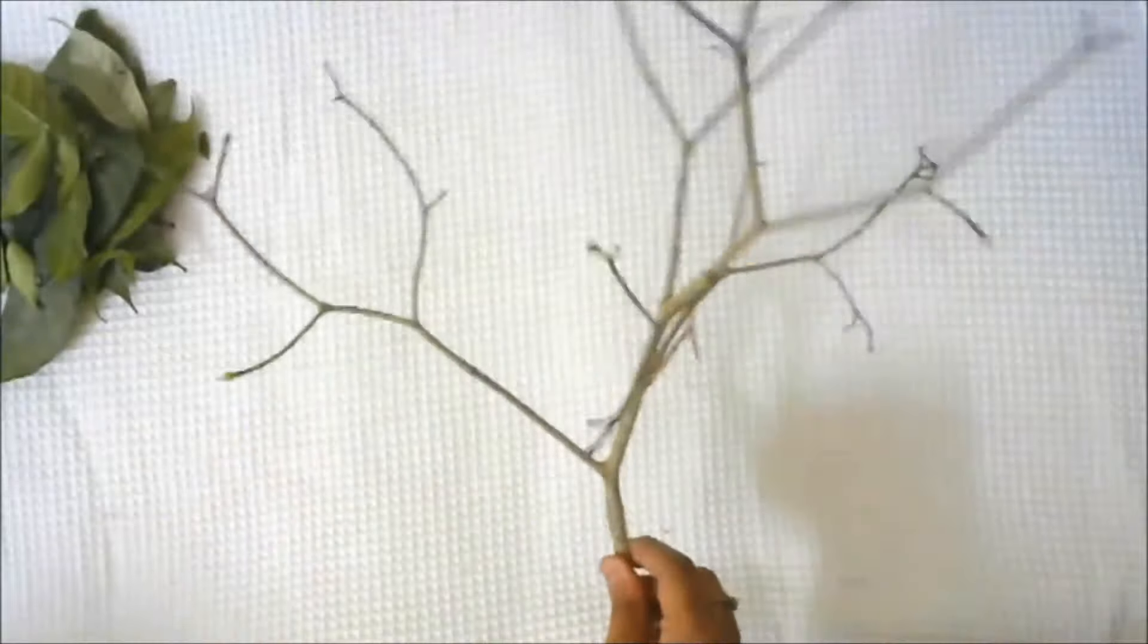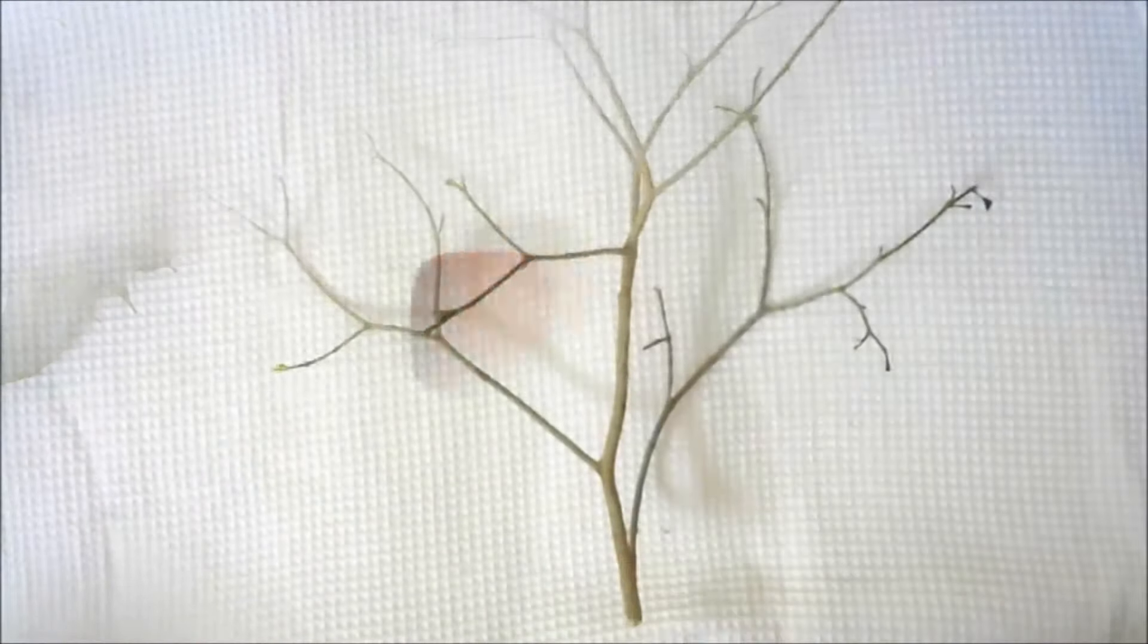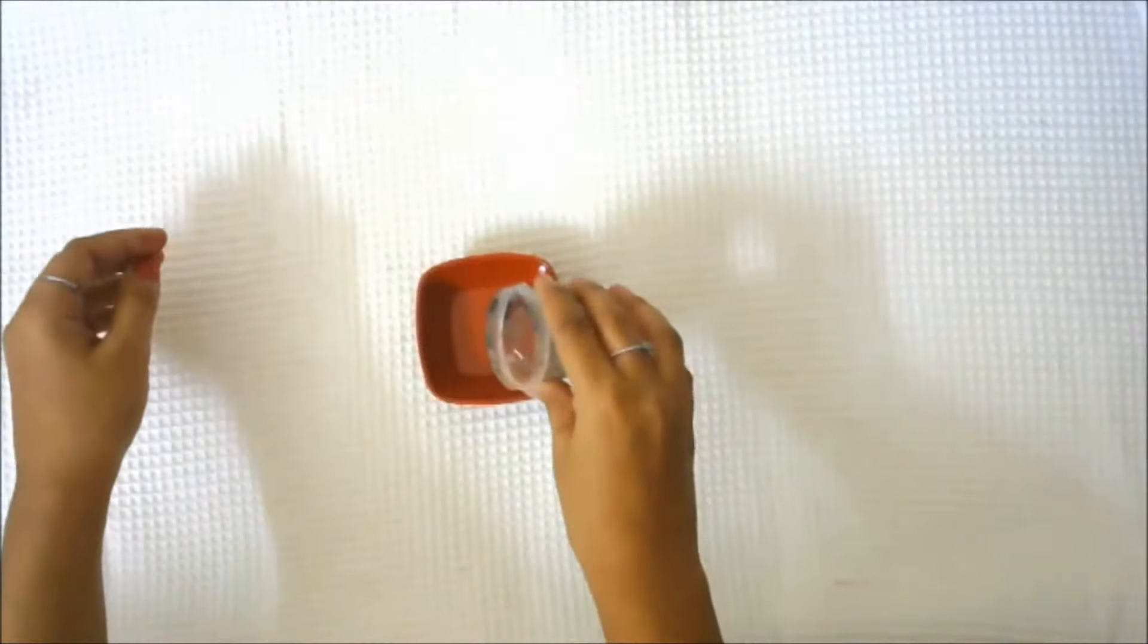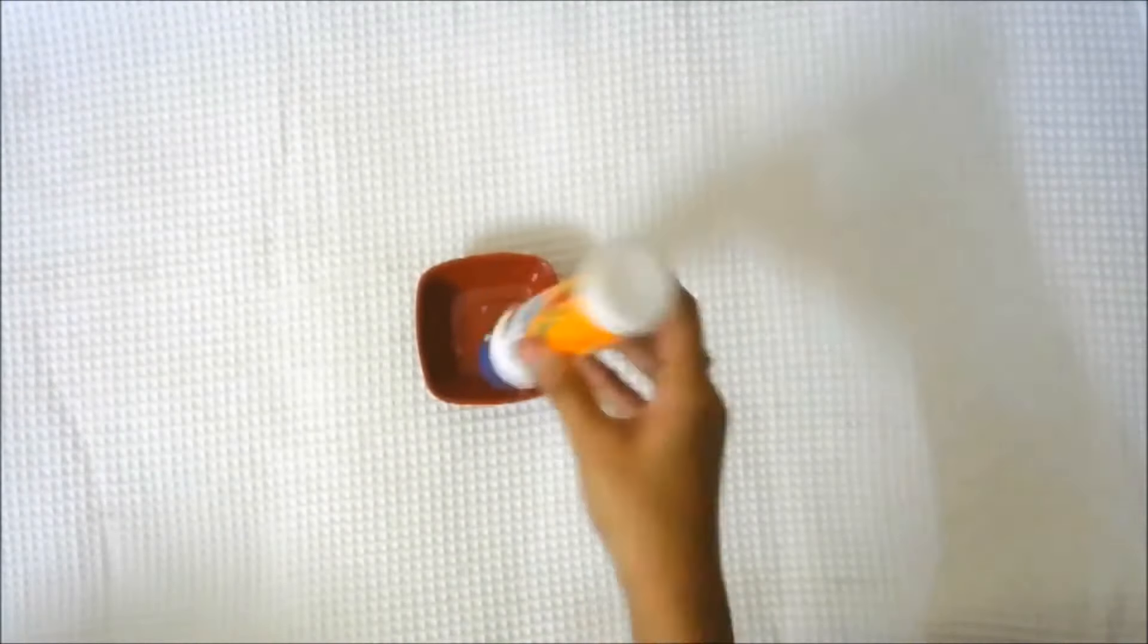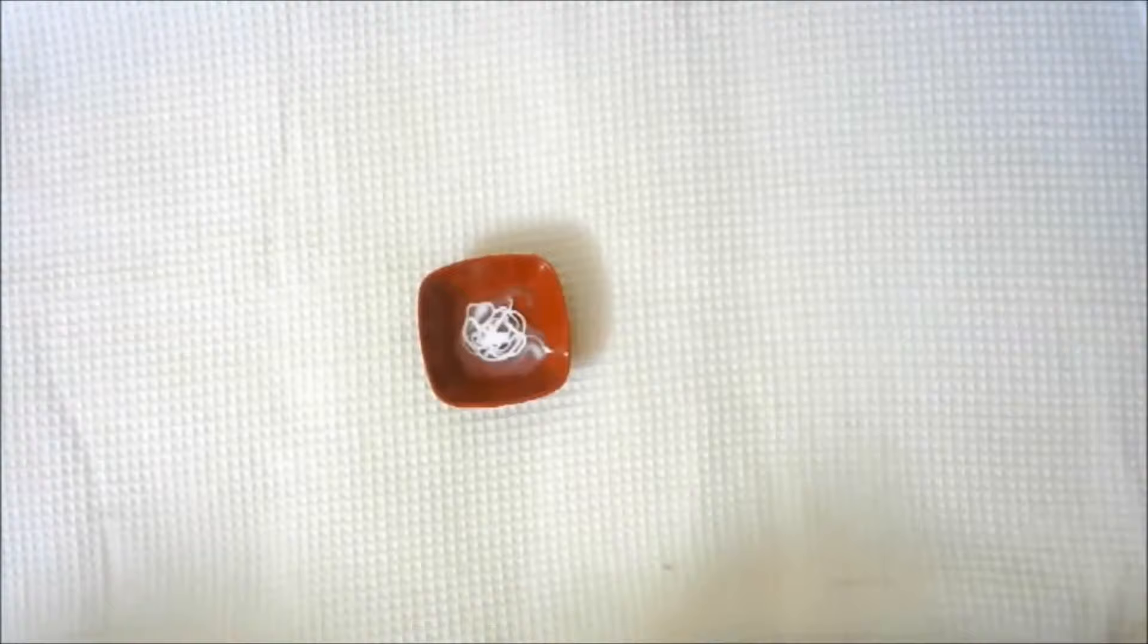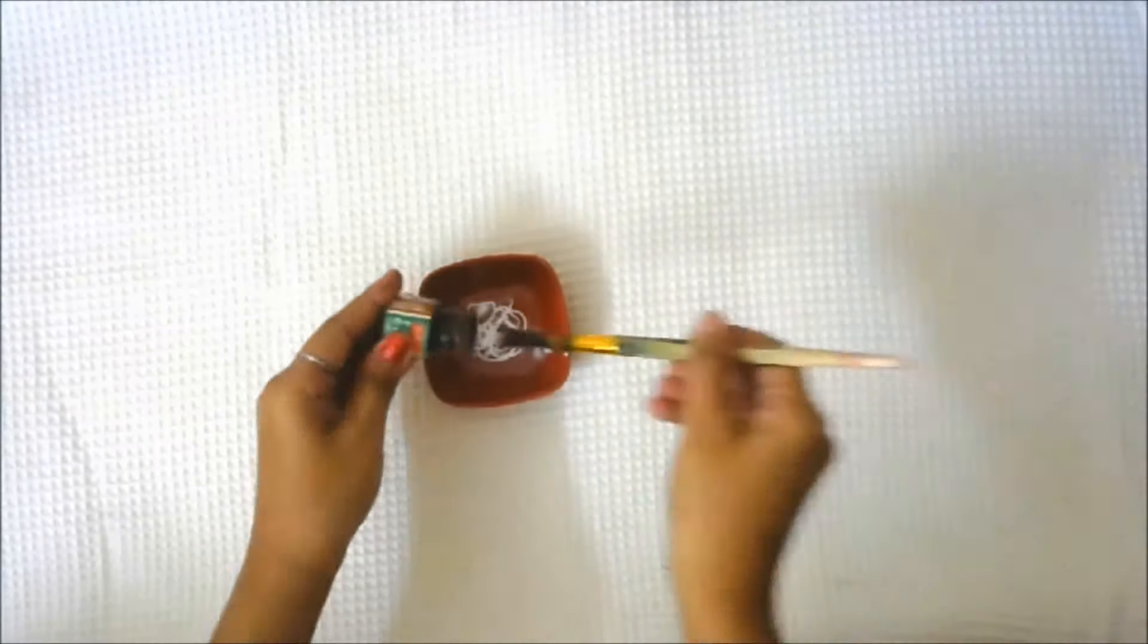So here is how it looks after removing all the leaves. Now take a small bowl, add some water and some fevicol. This mixture is going to make your branch strong because we are going to add some color to this, making it a mixture of a dark brown color.